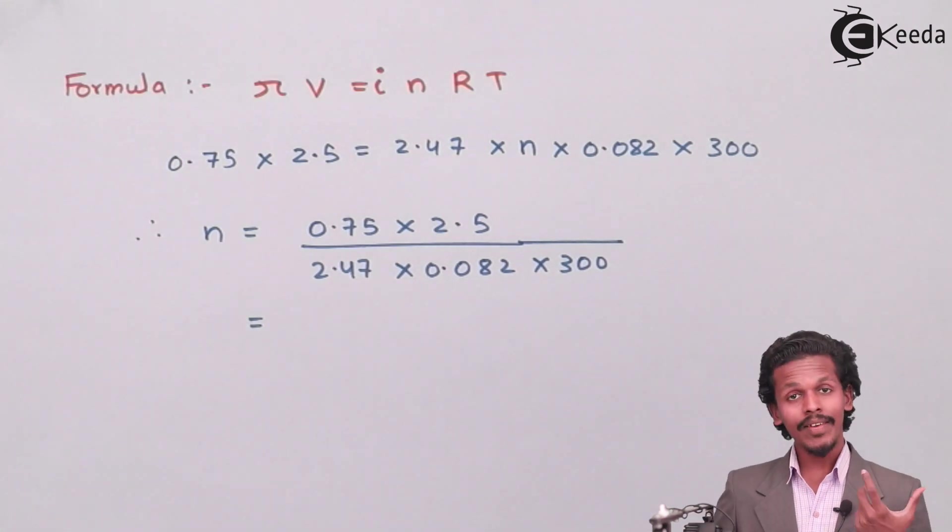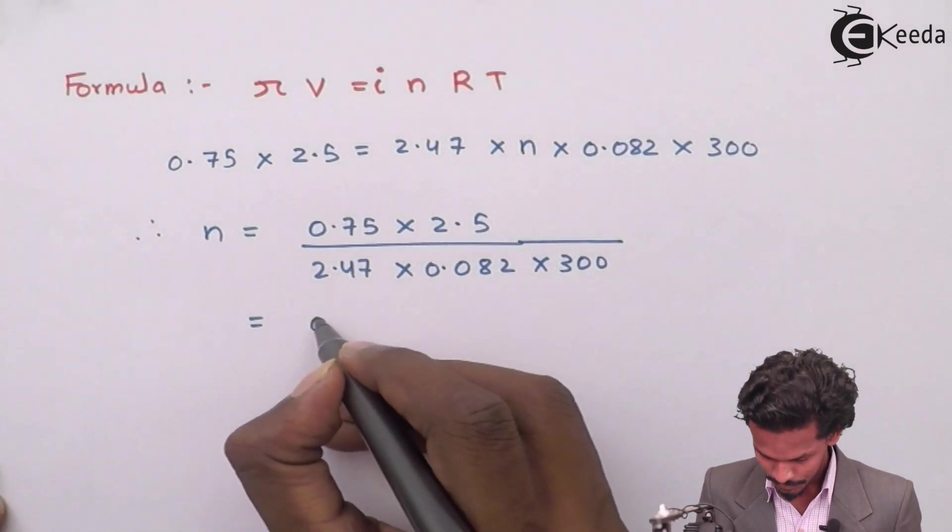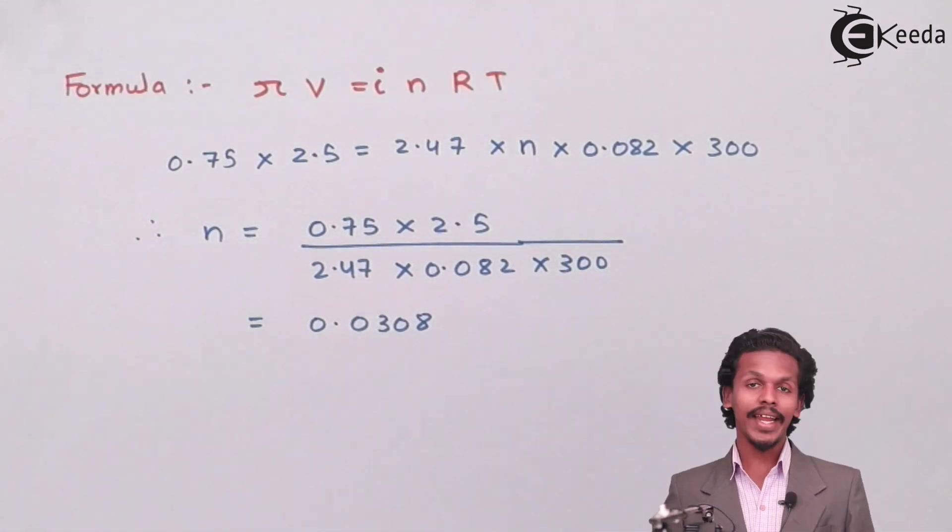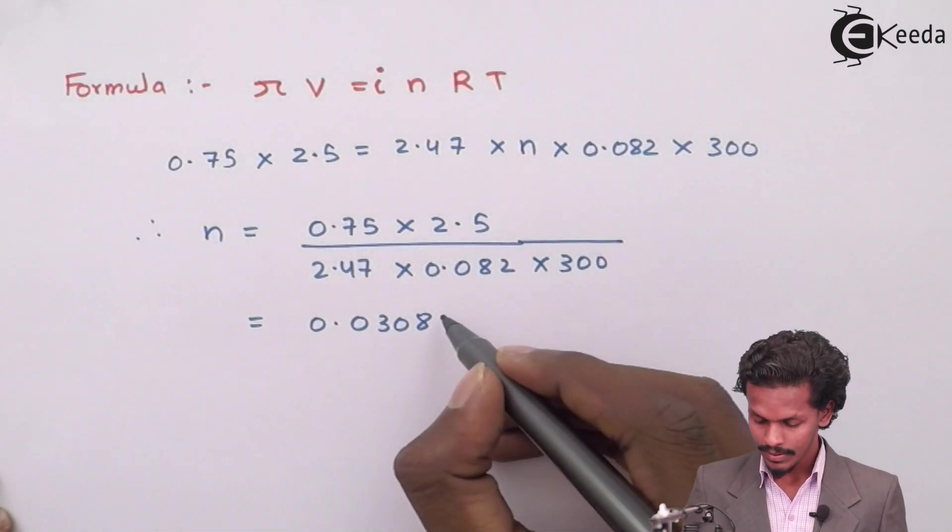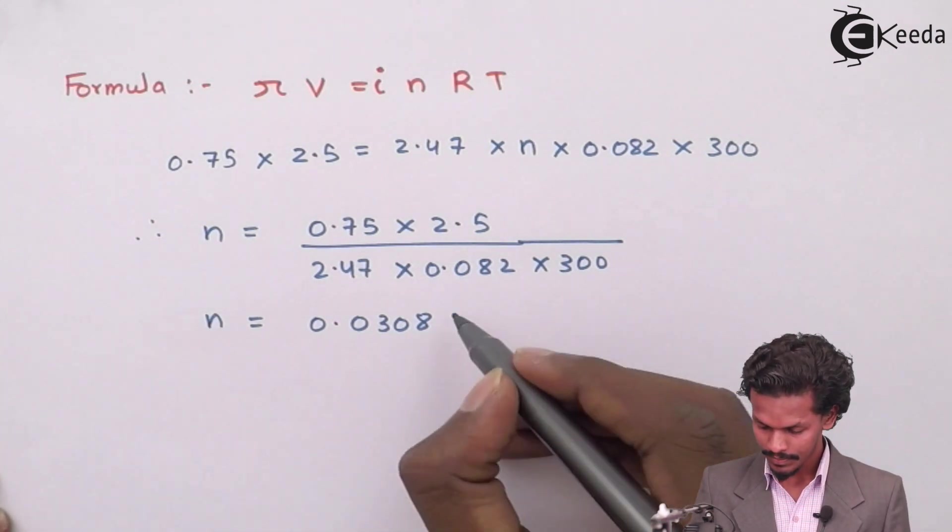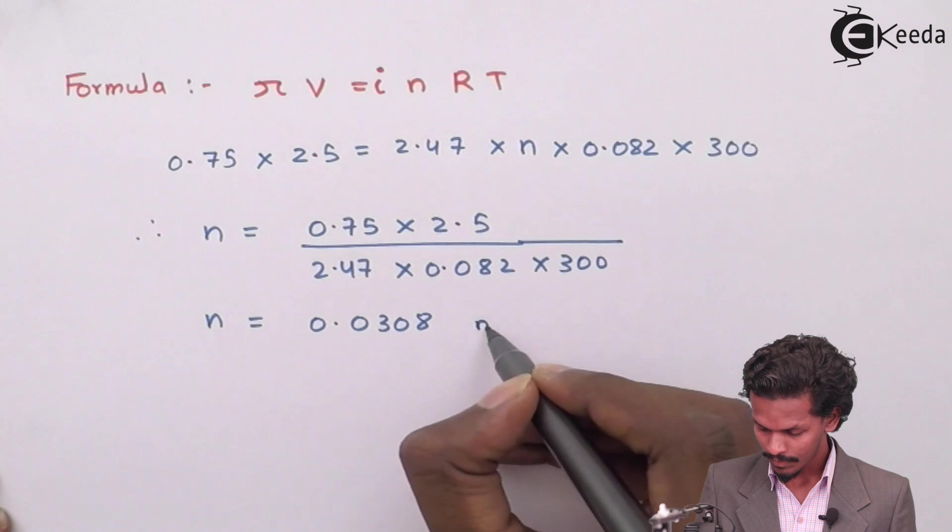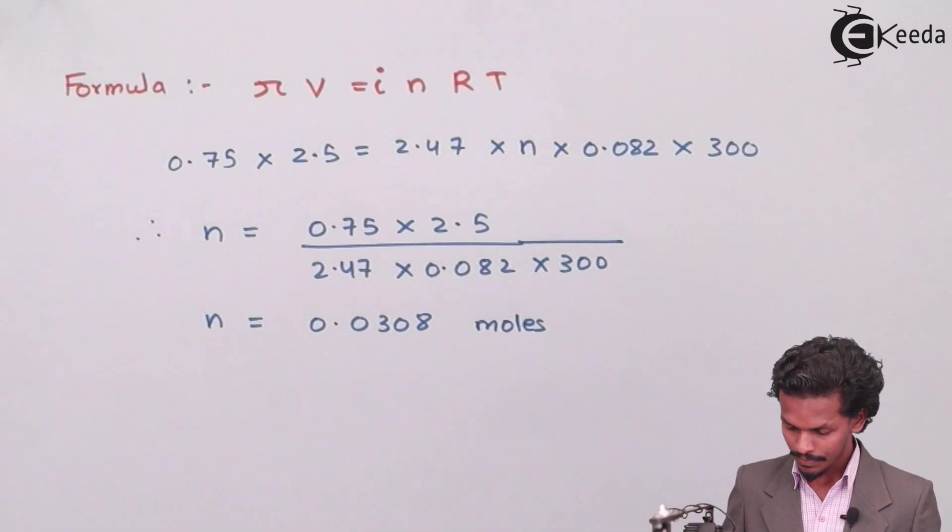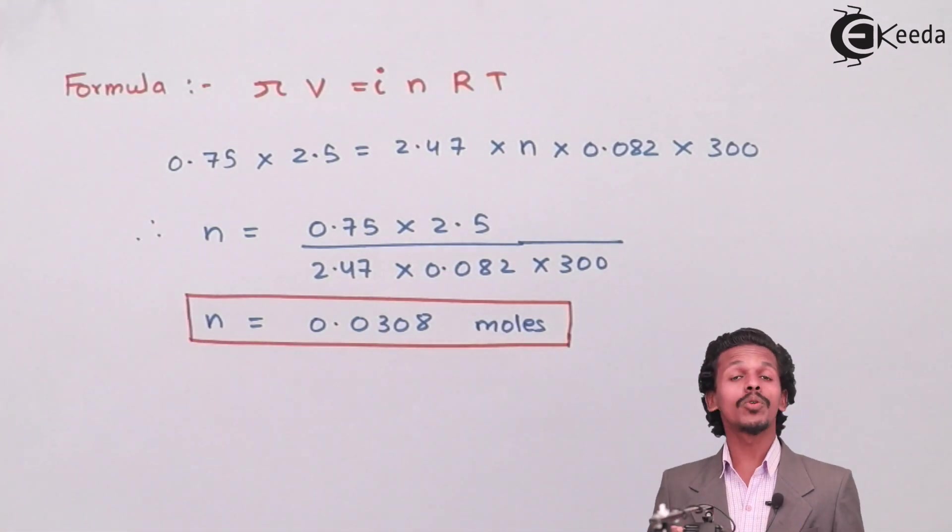So this made me to go with 0.75 multiplied by 2.5 divided by 2.47 into 0.082 into 300. So let me calculate this thing. The given answer that we have calculated now, that is for number of moles, is 0.0308 moles.